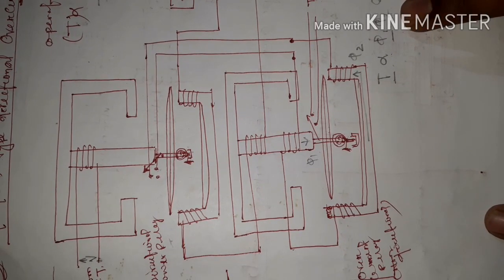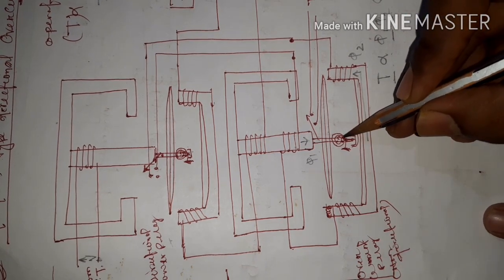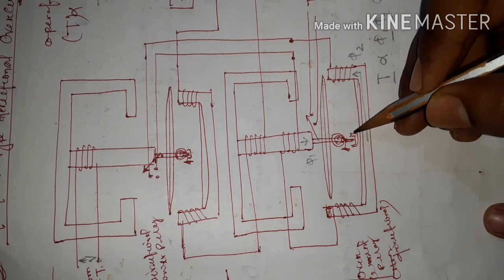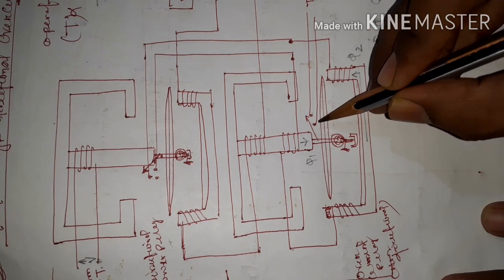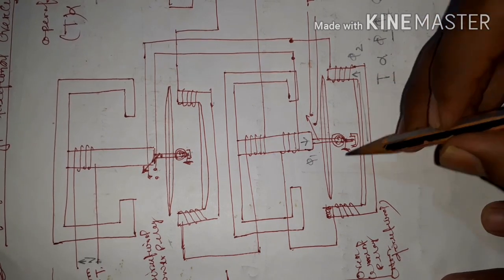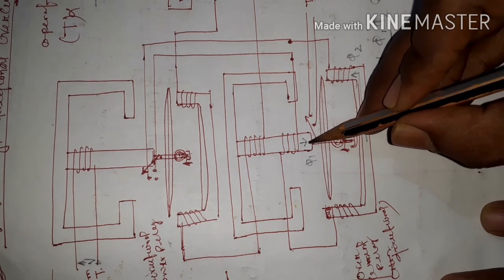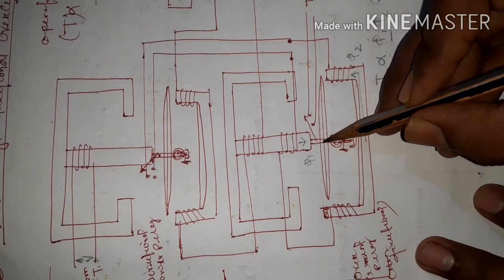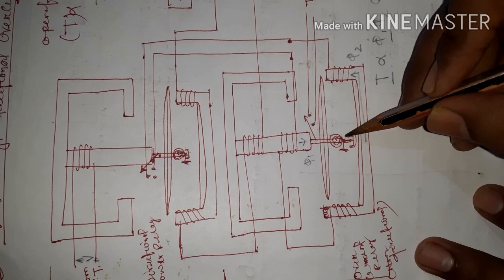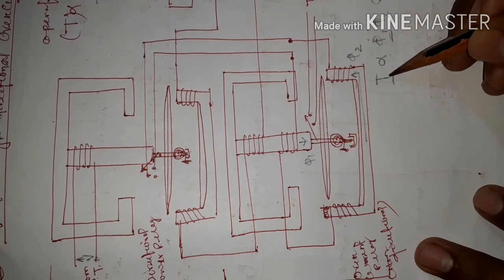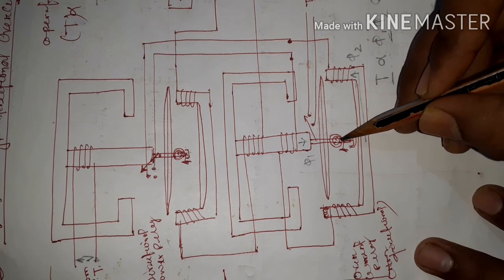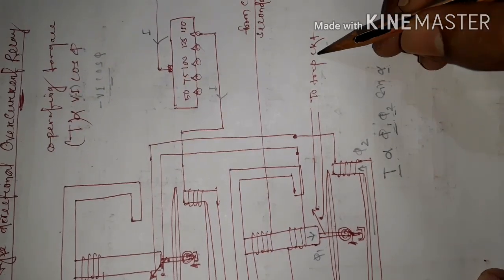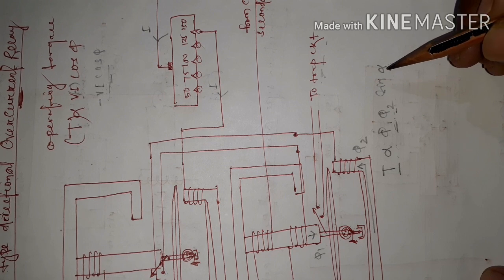When this operating torque is greater than the restraining torque provided by the spiral spring, the aluminum disc rotates in the clockwise direction and closes those two contact points. Under normal operating condition the operating torque from the interaction of φ1 and φ2 is not sufficient to rotate the disc against the restraining torque. But when a fault occurs, the two fluxes develop an operating torque whose magnitude exceeds the restraining torque, so the disc rotates clockwise, closes the contacts, the trip circuit is activated, and the trip coil is energized.